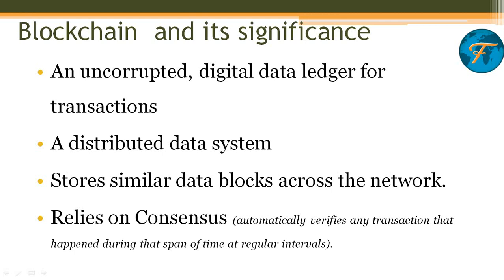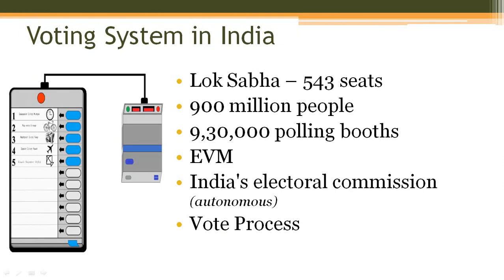Secondly, blockchain is a distributed data system — not centralized. Unlike other systems where a central authority governs updates and deletions, here the power of control is with everyone. Thirdly, similar data blocks exist across the network, so every stakeholder carries the same data block. They can have consensus verification from time to time with other participants to verify the authenticity of the block they carry. This idea of an uncorrupted blockchain motivates employing it for an electoral system.